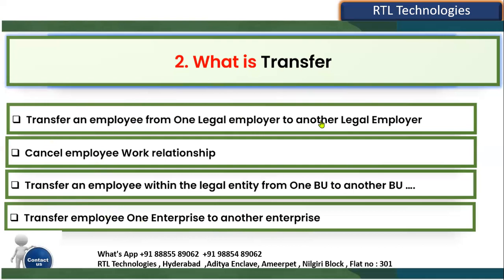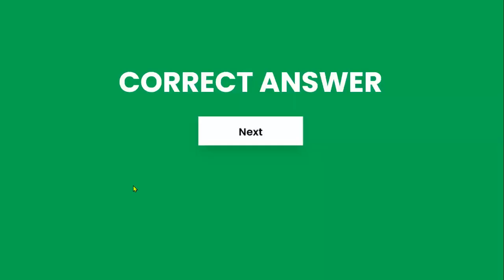Transferring an employee from one legal employer to another is a global transfer. Cancelling a work relationship is not a transfer. The correct answer is transferring an employee within the legal entity — meaning within the same legal employer, you can move someone from one department to another, one BU to another, or one position to another. Transferring from one enterprise to another doesn't apply, as there is only one enterprise when implementing HCM.